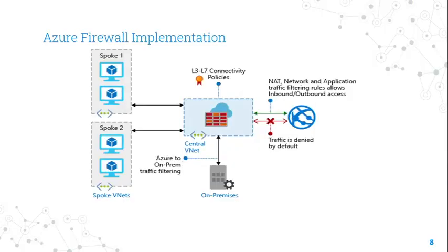Azure Firewall Implementation: Controlling outbound network access is an important part of overall network security plans. For example, you may want to limit access to websites, or you may want to limit the outbound addresses or ports that can be accessed.